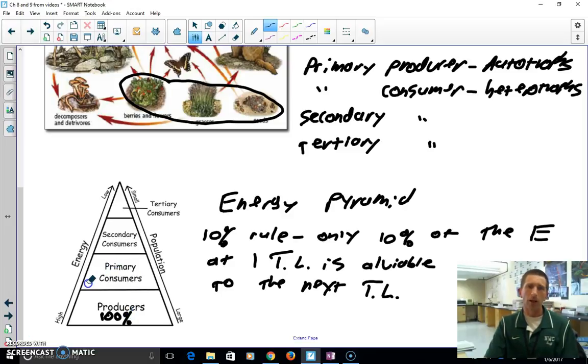Primary consumers then, like the butterfly or like the deer, we can only have 10% of the total energy available in this ecosystem is available to primary consumers. Secondary consumers, like the bear that eats the deer, excuse me, they only have 1% of the energy in the ecosystem available.